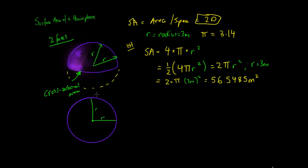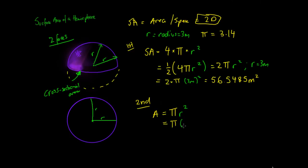Next we need to work out the area of the cross-section. The area of a circle is pi times the radius squared. Pi is the constant 3.14, and our radius is 3 meters. So the surface area of the circular cross-section is pi times 3 meters squared, which comes out to 28.274 meters squared.